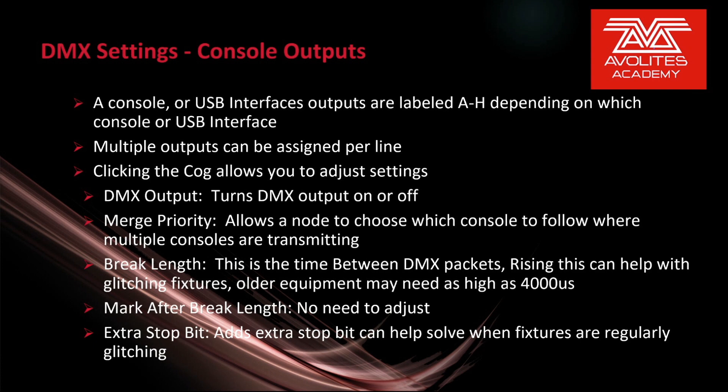A console or USB interface's outputs are labeled A through H depending on which console or USB interface. Again, multiple outputs can be assigned per line. If we click the info icon, the cog icon allows us to adjust settings. A DMX output turns DMX output on or off. Merge priority allows a node to choose which console to follow where multiple consoles are transmitting — this is used with DMX merge.